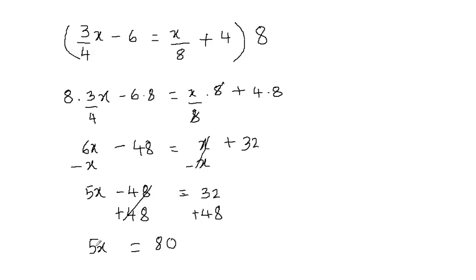This is 5 times x, and the opposite operation of multiplication is division. So to get rid of 5, we're going to divide both sides by 5. 5 and 5 cancel out, so I just have x on the left hand side, and 80 divided by 5 is 16. So this is my final answer.